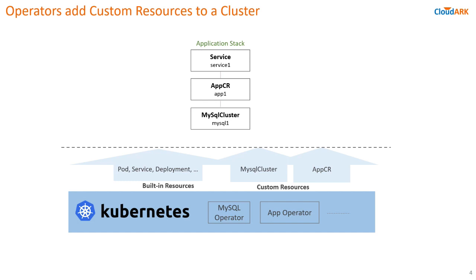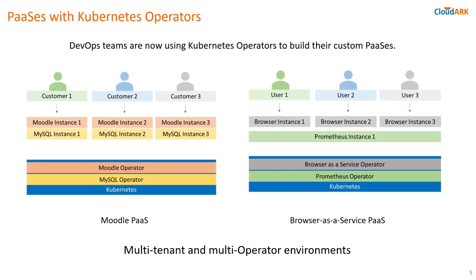The ensemble of Kubernetes built-in and custom resources that are deployed together to serve a specific workload can be thought of as an application stack. Increasingly, we are seeing a lot of DevOps teams use multiple Kubernetes operators to build their custom PaaS. This makes perfect sense as operator technology provides the right building blocks to deliver multi-tenancy required for any PaaS through the custom resource instances.